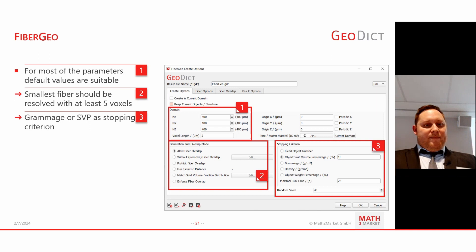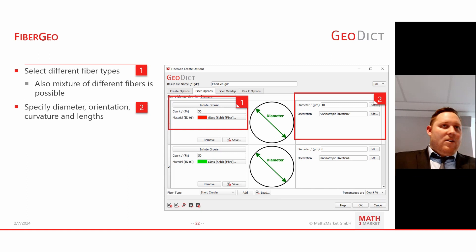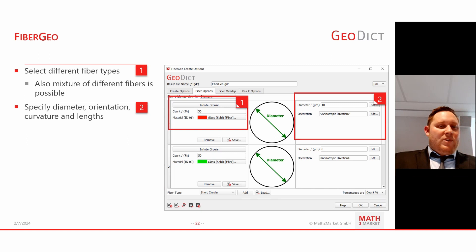When going for the fiber options, we can select different fiber types: straight fibers, hollow fibers, curved fibers, and so on. You can intermix different fiber types, giving great flexibility. Diameters and orientations can all be adjusted to parameters from your production or obtained from micro-CT images.